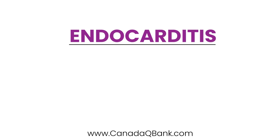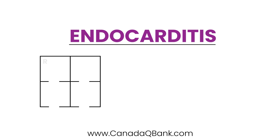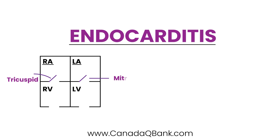In this video we're going to talk about endocarditis. Endocarditis is basically a bacterial infection of usually a heart valve. If we draw a basic diagram of the heart chambers — left atrium, right atrium, left ventricle — the heart valves are in these areas. We have the tricuspid, the mitral valve, the pulmonic valve, and finally the aortic valve. These valves allow blood to flow from one chamber to another and they open and close.